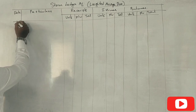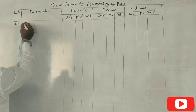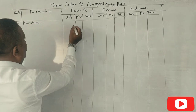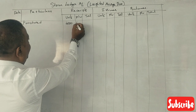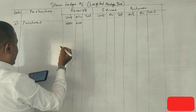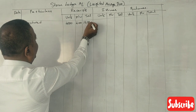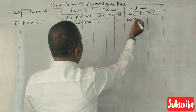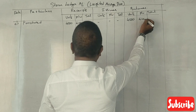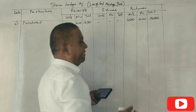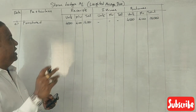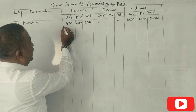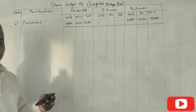On 2nd of January we have purchased 4,000 units of goods at 4 rupees per unit, and it becomes 16,000 rupees. So the total will be 4,000 units, 4 rupees, and 16,000 rupees. This is the opening purchase balance on 2nd of January.